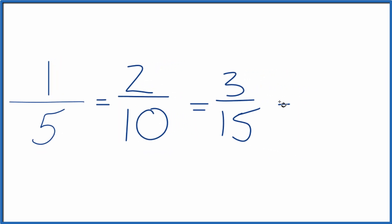Let's do one more. How about 4? 1 times 4 is 4. 5 times 4 is 20.